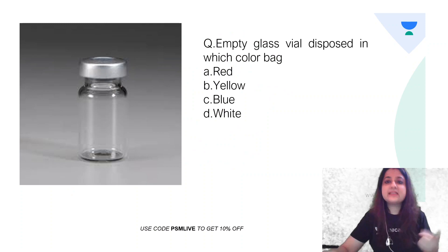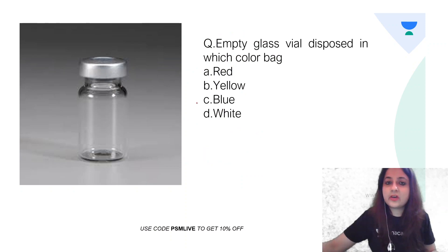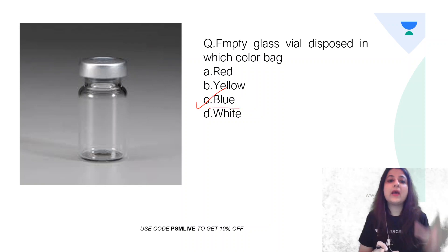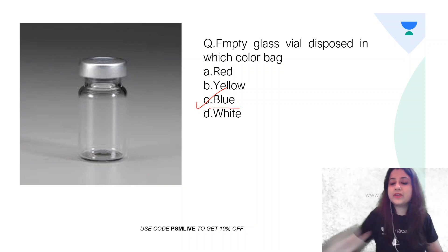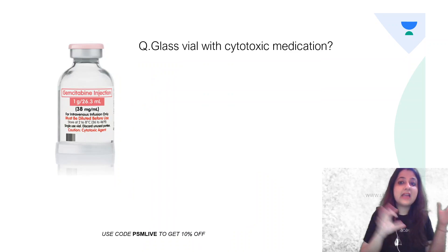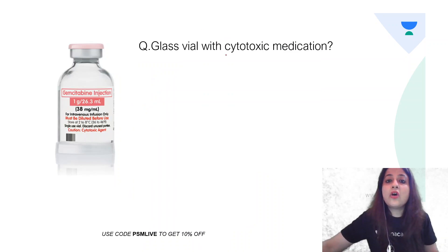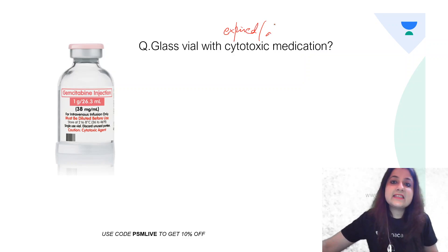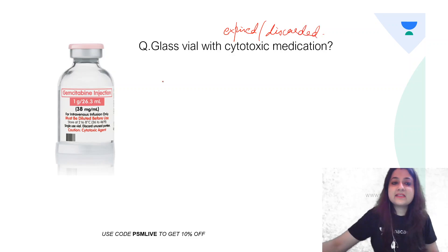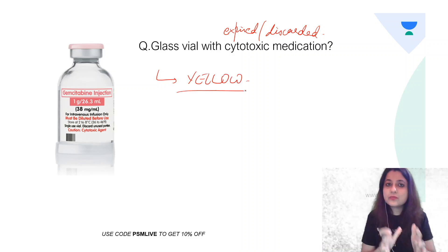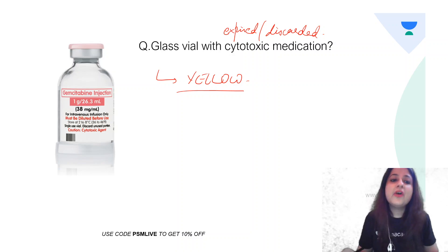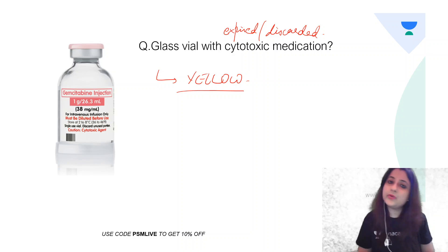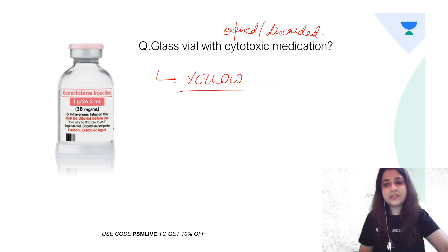The last image is an empty glass vial. Where should it be disposed? Any glass vial — whether empty, broken, or a glass slide — should go into a blue color bag. However, if the glass vial contains cytotoxic medicines, or expired or discarded cytotoxic medicines, it goes into a yellow color bag. I hope you enjoyed this short video, thank you for watching.